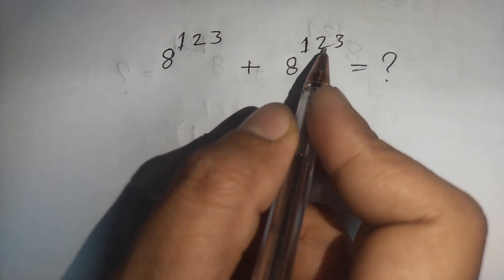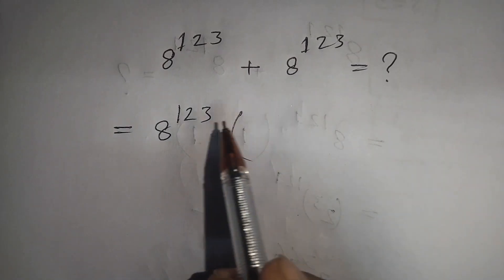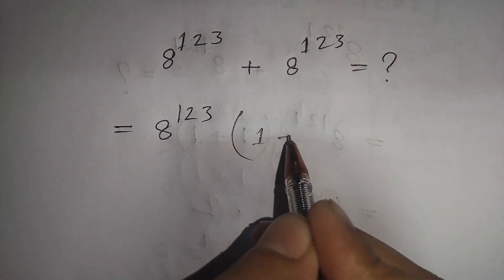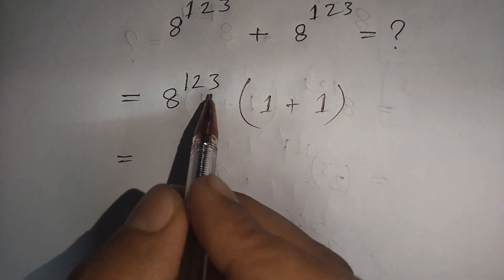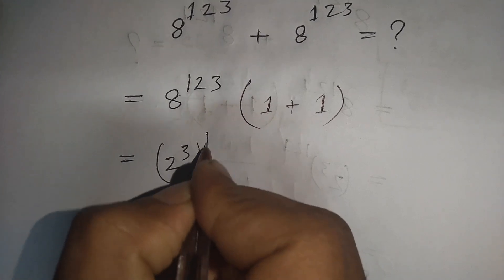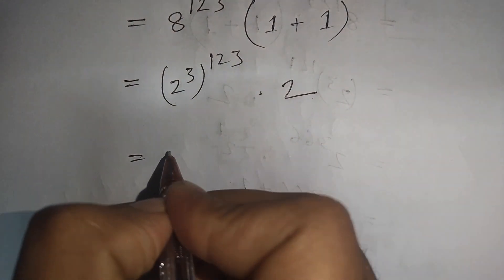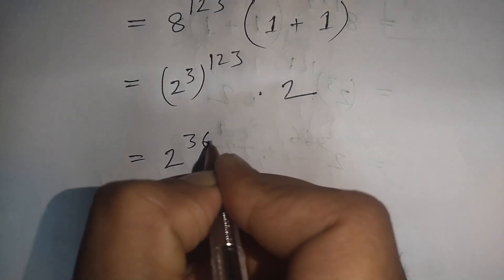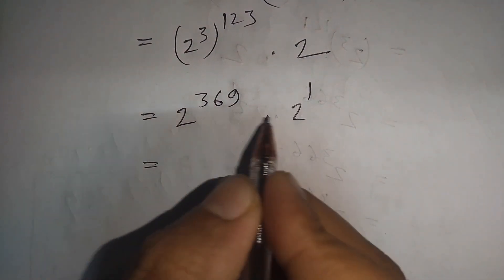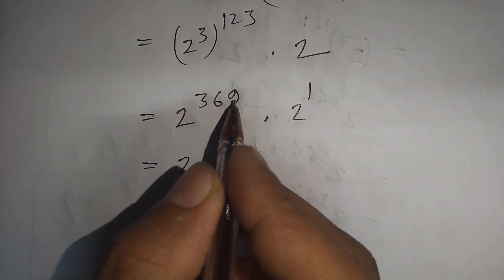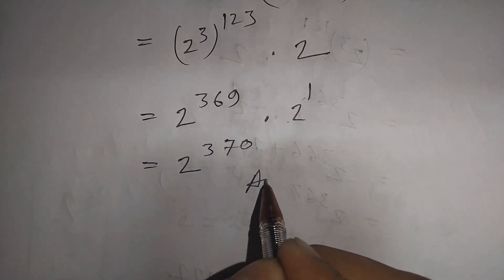Next problem: 8^123 + 8^123. Take 8^123 as common factor: 8^123 × (1 + 1) = 8^123 × 2. Since 8 = 2³, this is (2³)^123 × 2 = 2^(3×123) × 2^1 = 2^369 × 2^1. Same base, so we add powers: 2^(369+1) = 2^370. The correct answer is 2^370.